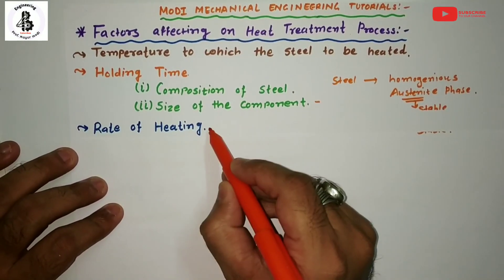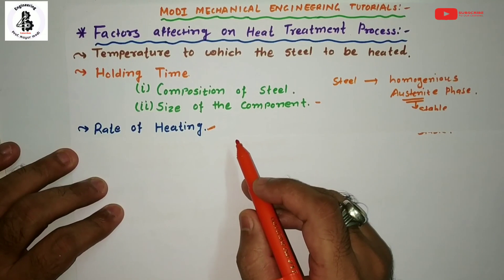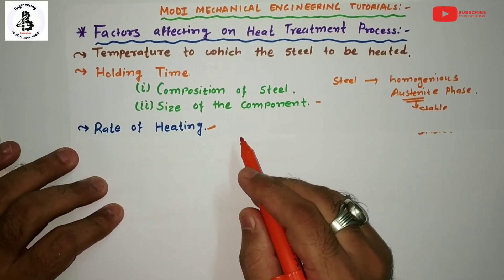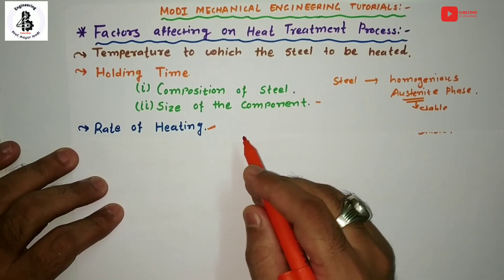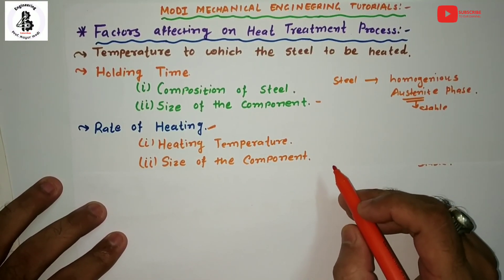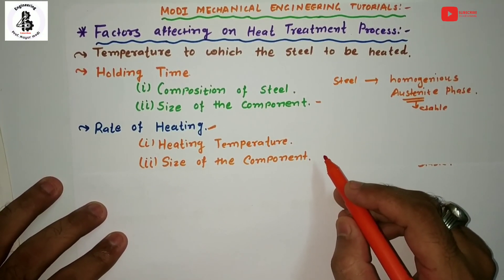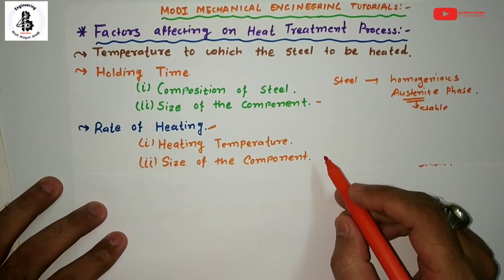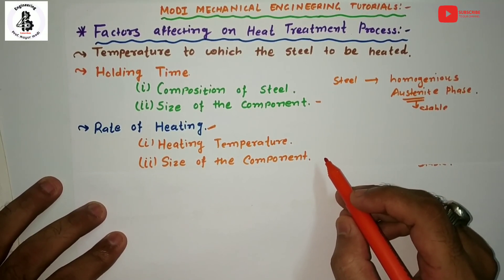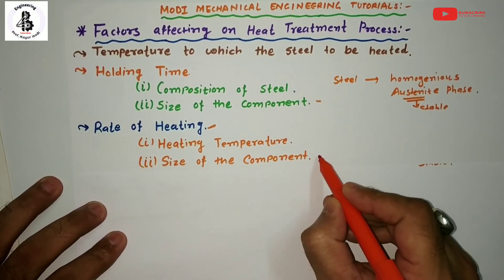After this, the rate of heating. The rate of heating of the specimens for heat treatment is a very important criterion — whether we should go for slow heating or fast heating. This depends on two basic things: first, heating temperature. If the heating temperature is low, then we should go for slow heating. If the heating temperature is high, then we should heat in two stages — in the first stage, slow heating is done to get a uniform austenite.